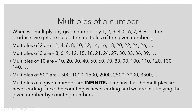The multiples of 2 are: 2, 4, 6, 8, 10, 12, 14, 16, 18, 20, 22, 24, 26, and so on. We can go on and on because numbers are unending, so multiples are also unending. There is no biggest multiple because multiples are infinite. The multiples of 3 are: 3, 6, 9, 12, 15, 18, 21, 24, 27, 30, 33, 36, 39, and so on.